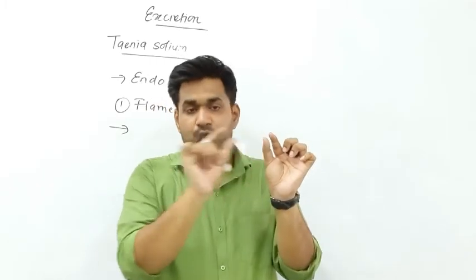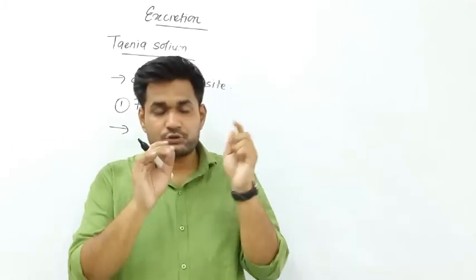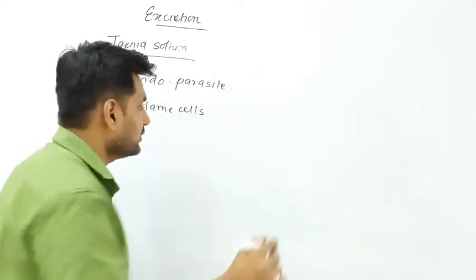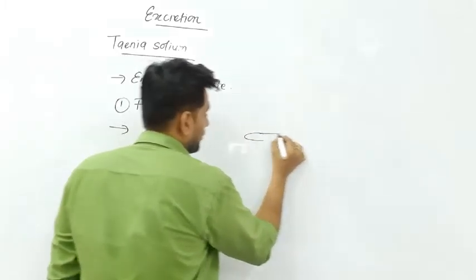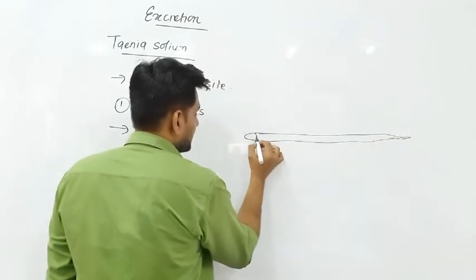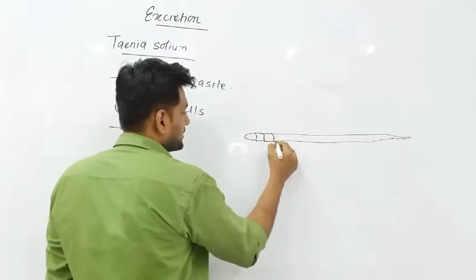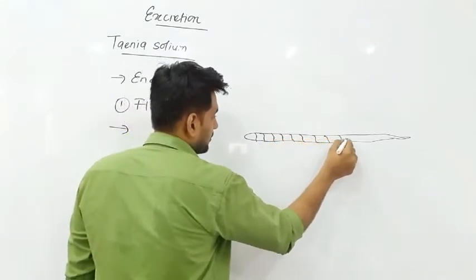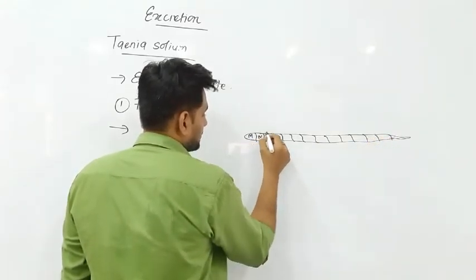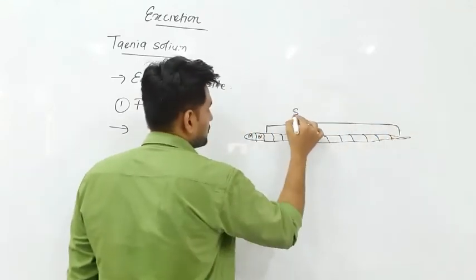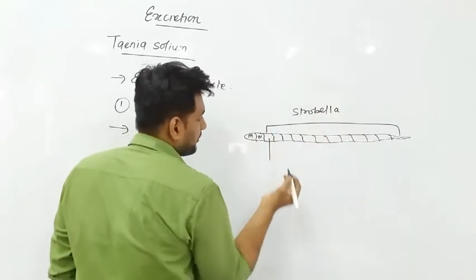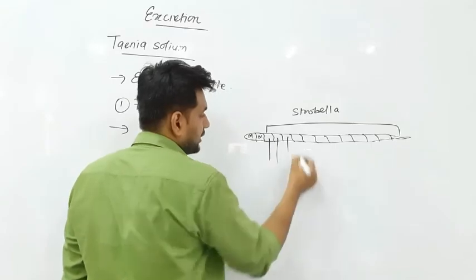The mouth and neck region, and the portion of the strobella. The strobella is made up of segments, and each segment is called a proglottid. So this is the mouth portion, and each segment is a proglottid — this segment is a proglottid, this segment is a proglottid, they are all the same single segments called proglottids.